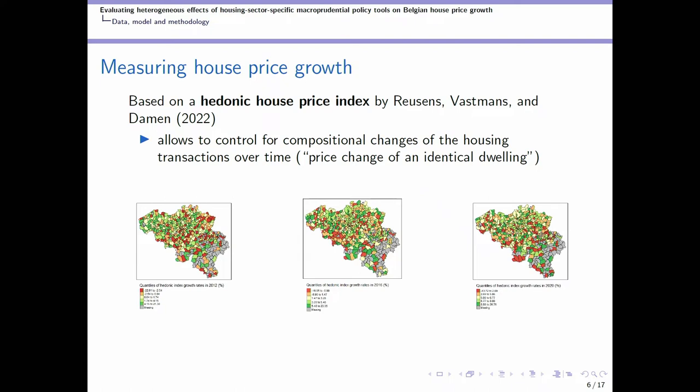In these figures we end up with a sample of almost 500 municipalities out of the 581 in Belgium today, after some data cleaning. We arrive at a measure of house price changes that incorporates quite some cross-sectional variation apart from the time variation within a particular municipality. We have a sample running from 2012 to 2020 and we show the evolution and distribution of house price growth rates for three years within this sample.